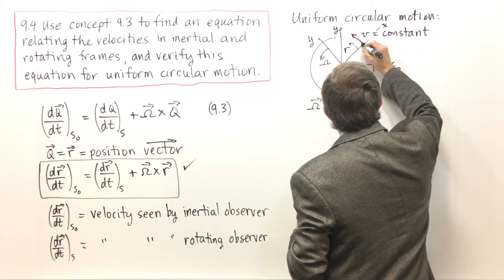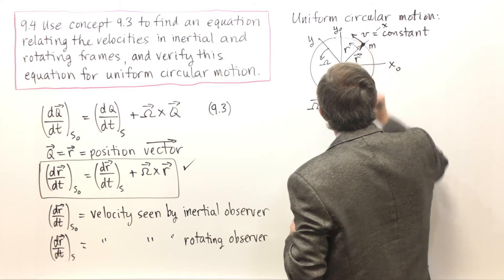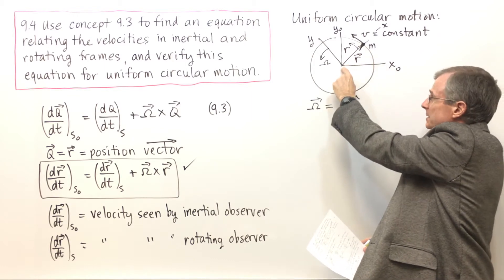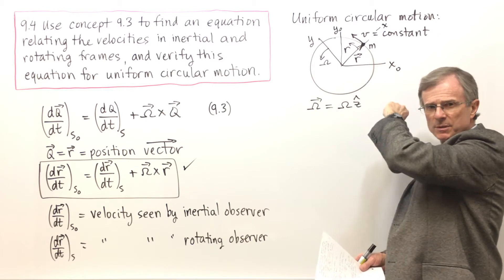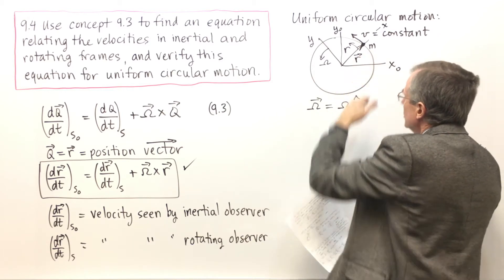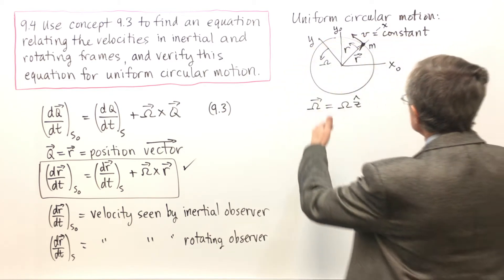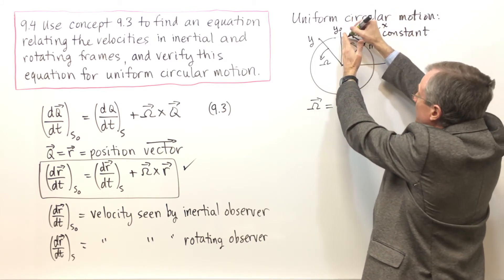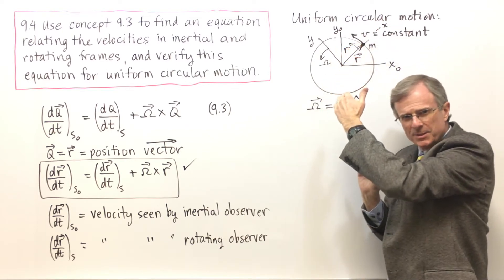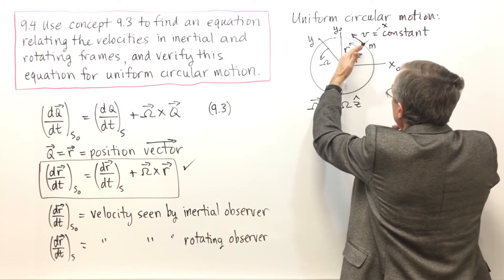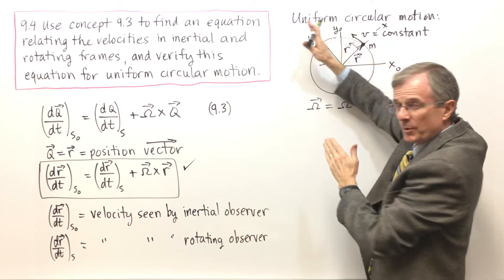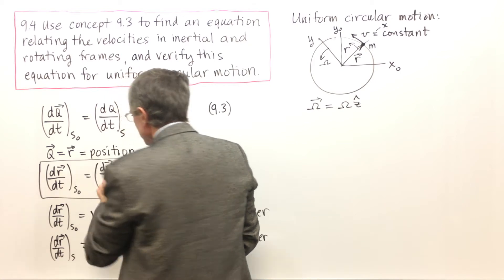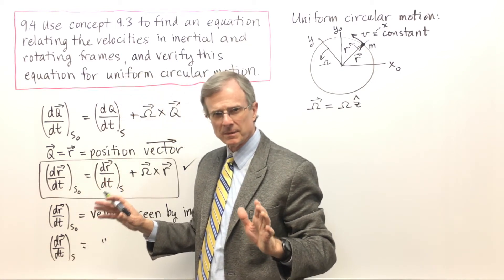So R is this vector that locates the position of the mass m. Its tail is at the origin and its head is at the position of the mass. So as this mass rotates, the R vector rotates with it. But the x axis is also rotating with the mass, so that R vector is always going to be pointing in the x direction as this rotates. So from the point of view of the rotating observer, this R vector isn't changing with respect to the axes.